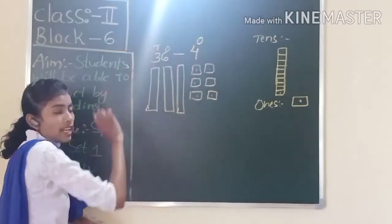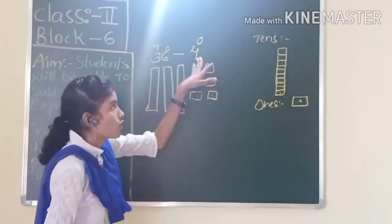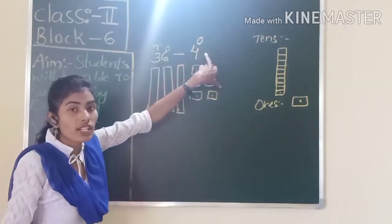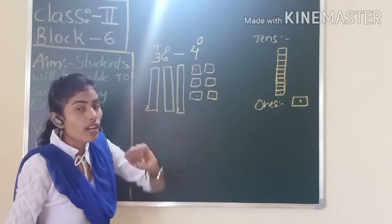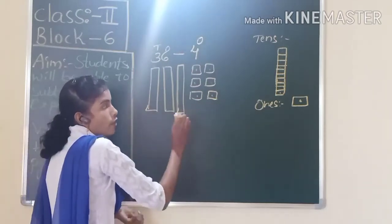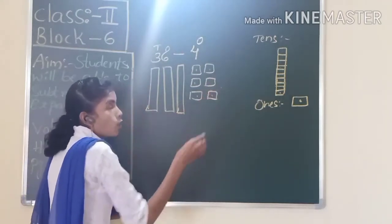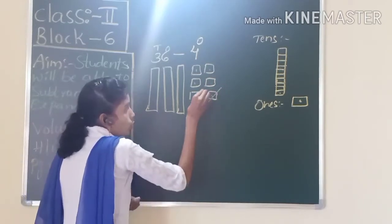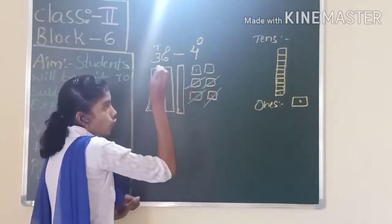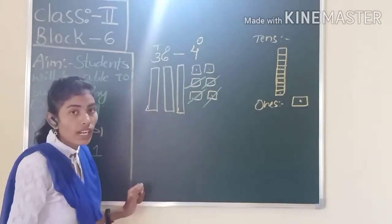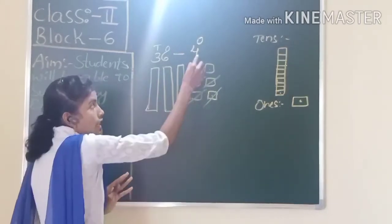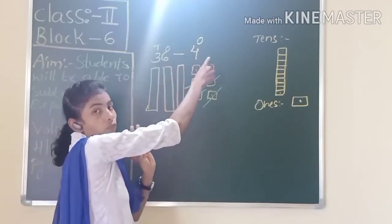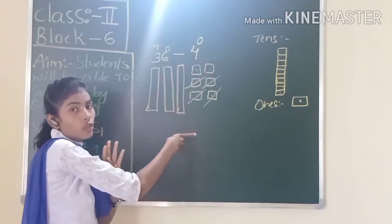Do you have tens in four? No, there are no tens in four. So we have only the ones place value. How many ones do we have? Four ones. So how many ones do we have to cut? We have to remove four ones from 36 — one, two, three, four. How many ones did I remove? Four ones, because here we have four ones. From 36 we are subtracting four ones using place value blocks.